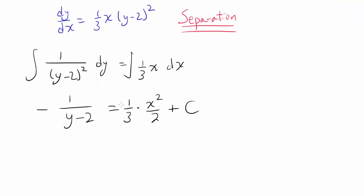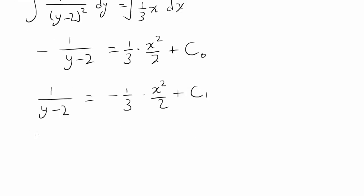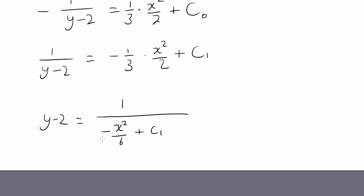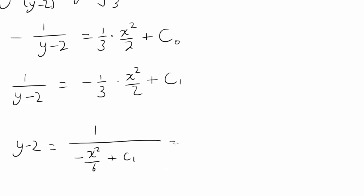So let's do so. Multiplying everything by -1, we get 1/(y-2) = -(1/3)(x²/2) - C. But -C is the same thing as just another constant. So let me write C₀, it's just another constant of integration. And we can take the reciprocal of both sides, getting us y-2 = 1/(-x²/6 + C₀). We can add 2 to both sides. Adding 2 to both sides gets us y = 1/(-x²/6 + C₀) + 2.